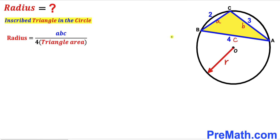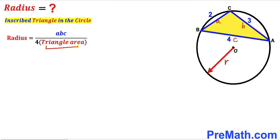Here we can see our a value is 2, our b value is 3, and our c value is 4. So our only task now is to calculate the area of triangle ABC.